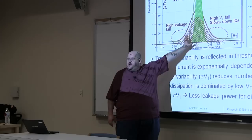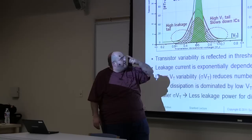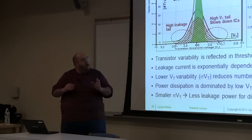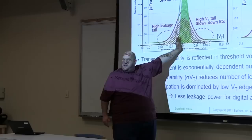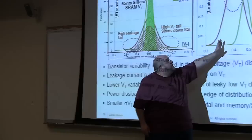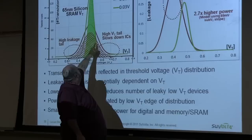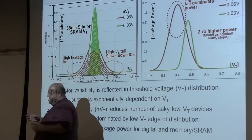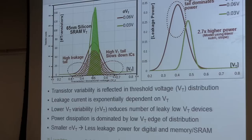On the right-hand side I've taken these distributions and computed the leakage distribution. Leakage is exponentially dependent on VT and subthreshold slope. Even though the VT distributions are symmetric around the center VT, I've got an exponential leakage curve. When I plot the leakage distribution, the red curve — the one with wider VT variation — shifts toward the lower VT side. This tells you that among a million transistors, it's the leaky transistors in the tail of the distribution that cause most of the leakage.